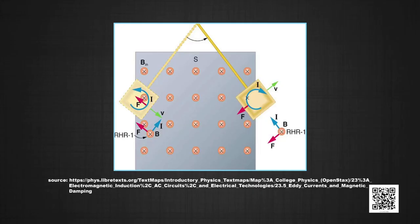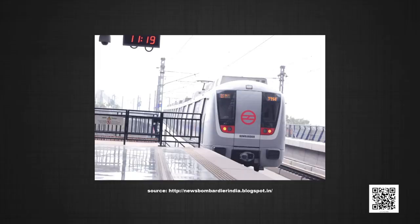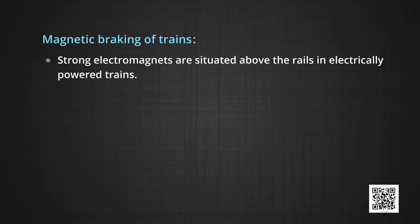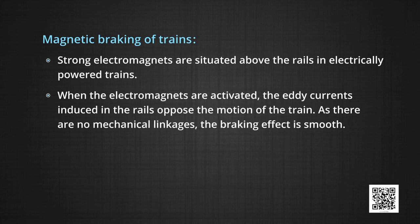The electromagnetic braking finds its application in magnetic braking of trains. Strong electromagnets are situated above the rails in electrically powered trains. When the electromagnets are activated, the eddy currents induced in the rail oppose the motion of the train. As there are no mechanical linkages, the braking effect is smooth.